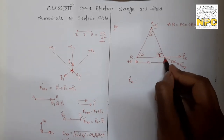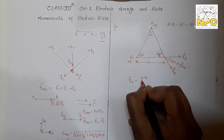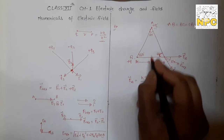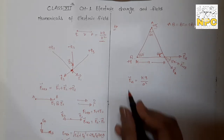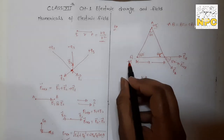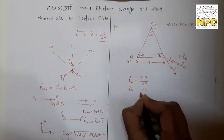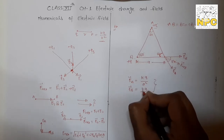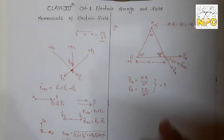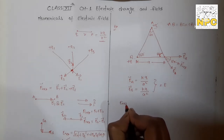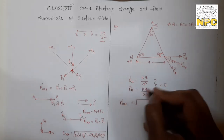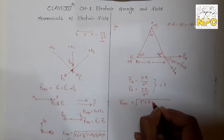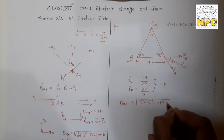Now if instead one charge were negative — say A is positive and B is negative — then the directions change: E_A is away from A and E_B is towards B (negative charge). The angle between them becomes 120°. cos120° = −1/2. So E_net = √(E² + E² + 2E²·(−1/2)) = √(2E² − E²) = √(E²) = E = KQ/A². When the charge is negative, the magnitude changes due to the change in angle.